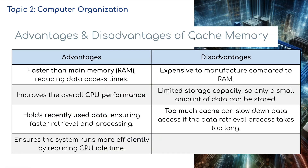Looking at the advantages and disadvantages of cache: it is faster and more expensive than RAM. It improves overall CPU performance but has a limited storage capacity. It holds recently used data, though too much cache can slow down data access if the retrieval process takes too long.